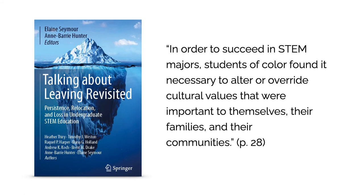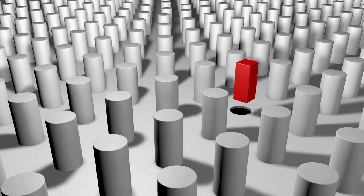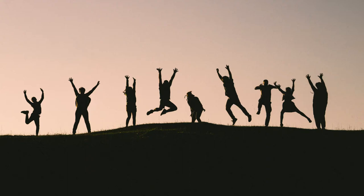In the 2019 publication 'Talking About Leaving Revisited,' researchers note that in order to succeed in STEM majors, students of color found it necessary to alter or override cultural values that were important to themselves, their families, and their communities. When a person is forced to override their values, they're being forced to change who they are. Fitting in places one's brain in an active state of stress, which over time leads to psychological fatigue. Belonging, on the other hand, means being accepted for one's true authentic self.